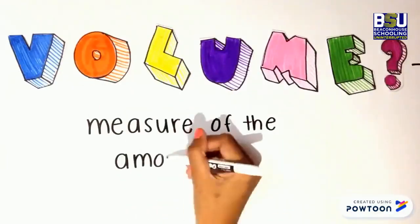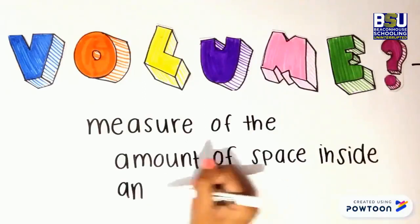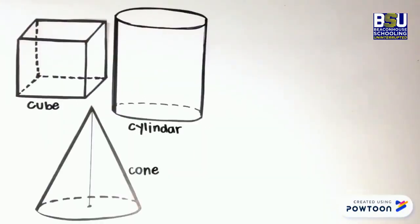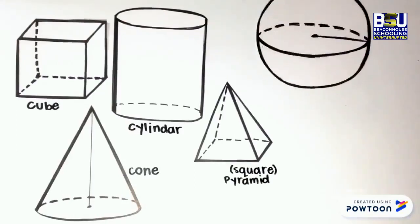It's the measure of the amount of space inside an object. These could be a cube, cylinder, cone, pyramid, or even a sphere.